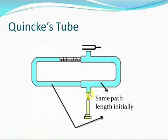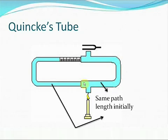At one end of the Quincke's tube is a candle, and on the other end there is a tuning fork set at a certain frequency. When the tuning fork is sounded, waves are generated — one wave travels through one path and the other wave travels through the other path. The length of both tubes is kept the same, so both waves come to the meeting point at the same time after travelling the same distance.